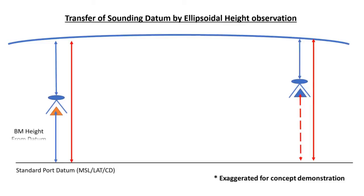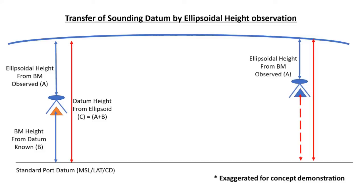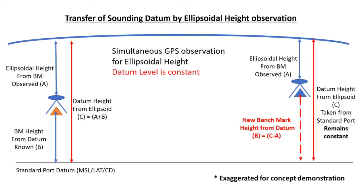By doing simultaneous observation, we are trying to establish the height difference from ellipsoid to the established benchmark and take that same height and transfer it to the new benchmark. Here, the datum level remains same. Only that you are trying to find is where is your datum level in relation to your new benchmark.